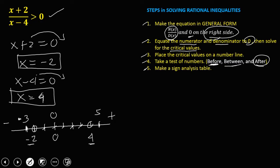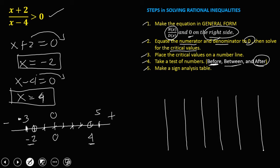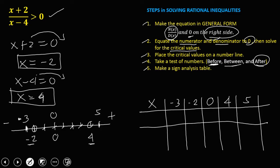Then make a sign analysis table. Our sign analysis table has x values: negative 3, negative 2, 0, 4, and 5. For the numerator we have x plus 2, and for the denominator, x minus 4.